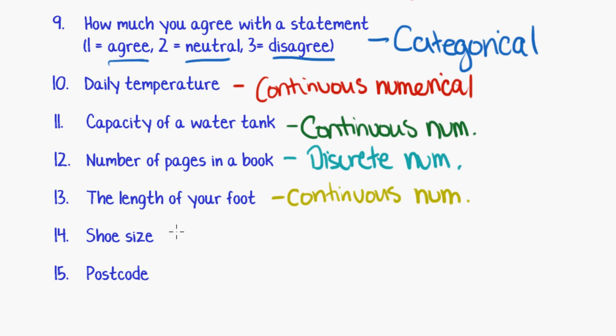Now, unlike the length of your foot, the shoe size you can only give certain responses to. You could say you're a size 7, you could say you're a size 7.5, but you can't say you're a size 7.435, because that just doesn't make any sense. So the numbers there are discrete.